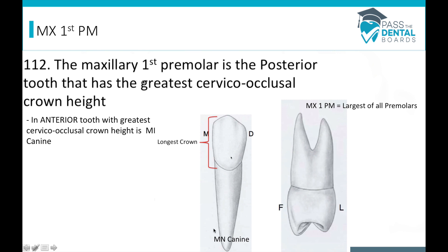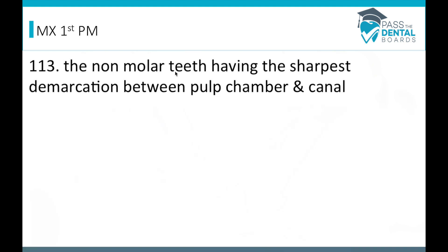Remember the mandibular canine is the tooth with the longest crown. The non-molar tooth having the sharpest demarcation between pulp chamber and canal is the maxillary first premolar.